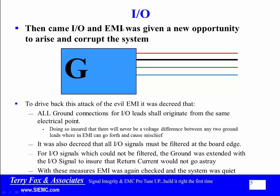Then came IO, and EMI was given a new opportunity to arise and corrupt the system. To drive back this attack of evil EMI, it was declared that all ground connections for all IO leads shall originate from the same electrical point. Doing so ensured that there will never be a voltage difference between any two ground leads where EMI can go forth and cause mischief. It was also decreed that all IO signals must be filtered at the board edge.